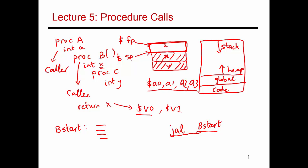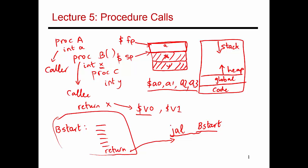At the end of BSTART, there's going to be a return instruction, which should bring control back to where procedure A left off. How do I handle that? Because in the code for B, B has no idea where it got invoked from — it could have been called from a variety of different procedures. So the code for B somehow has to know where it has to return to. The role of the jump and link is to facilitate that return back from procedure B.